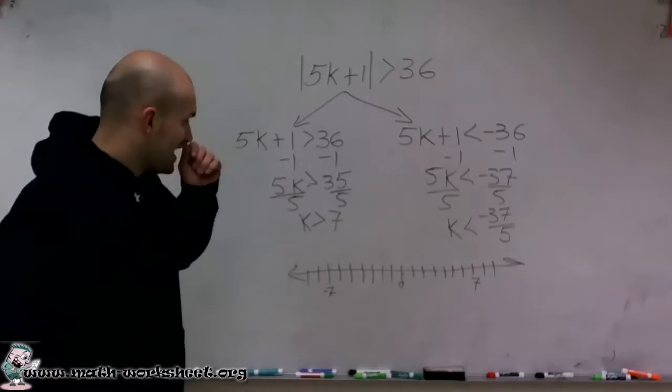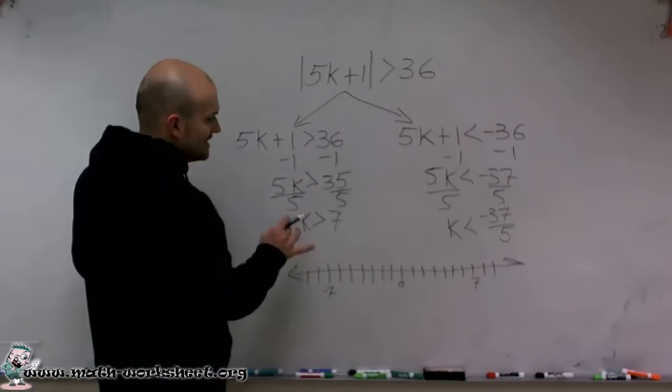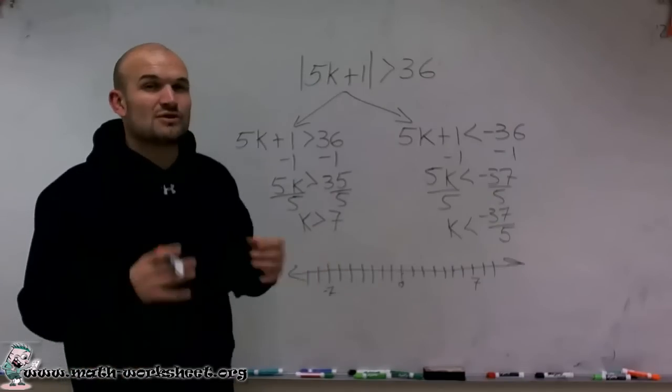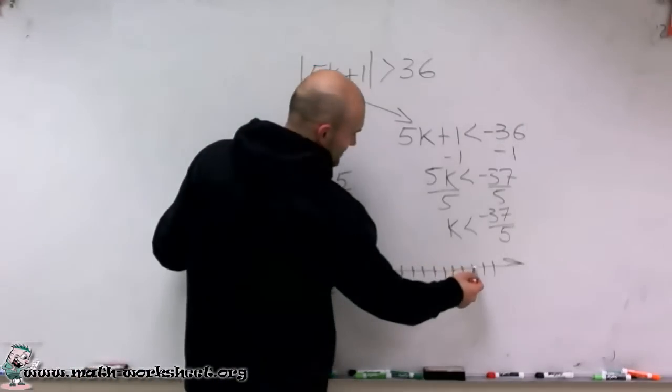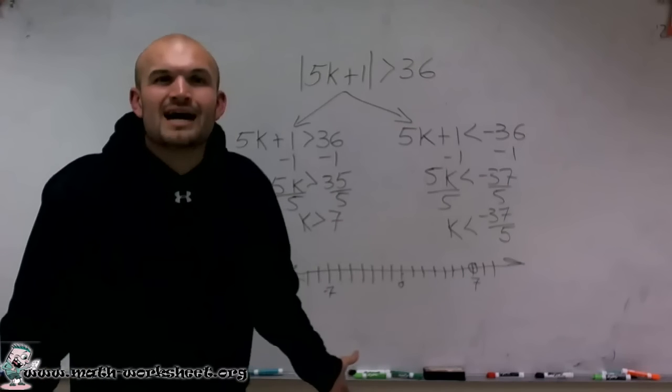So what we do is we look at, first of all, we want to plot our points, where exactly they're going to be. And I notice the inequality symbol, since it's greater than and less than, not greater than or equal to or less than or equal to, I'm going to have an open circle. So therefore, I'm going to first plot 7, and then I need to say, where's negative 37 divided by 5?